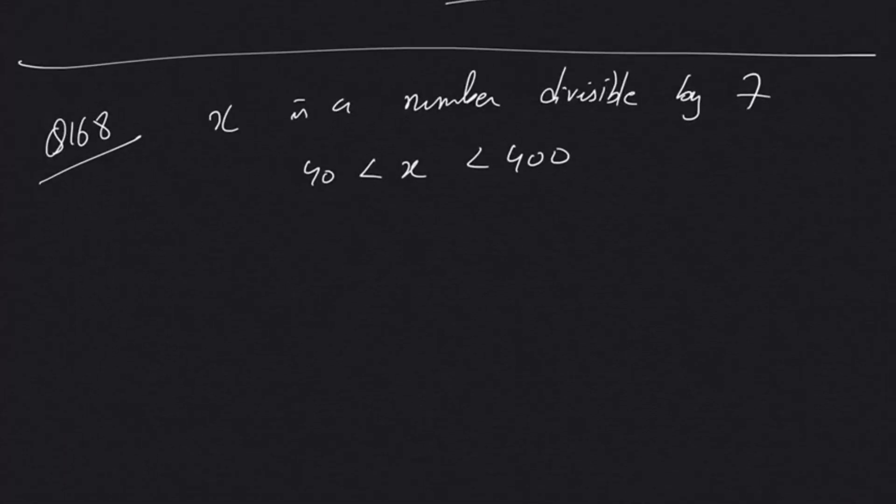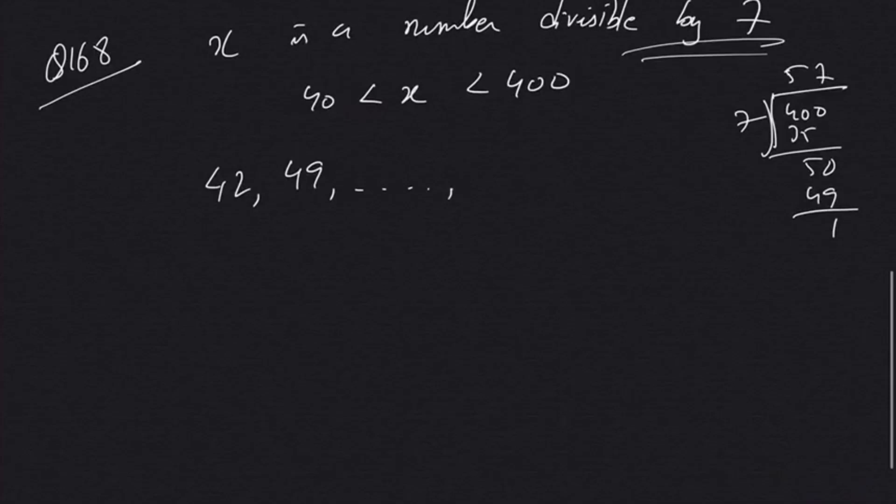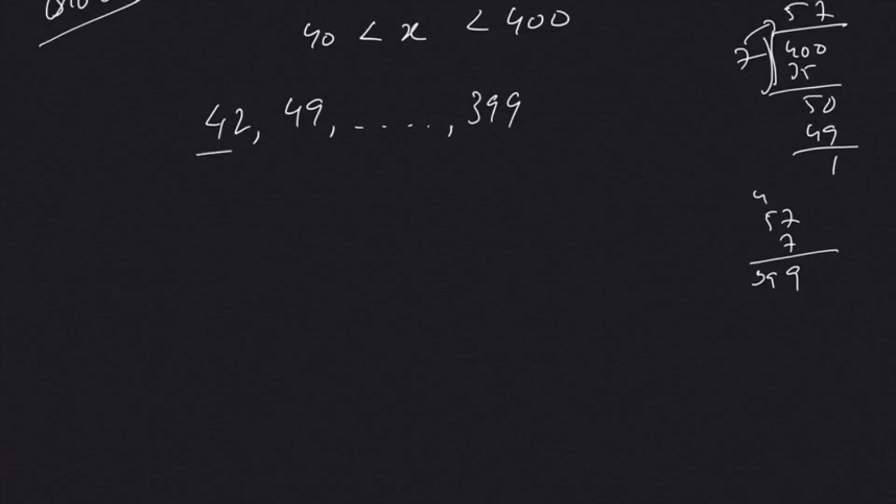Let's try to find out the sequence. 40 is not divisible by 7. The first number is 42, divisible by 7. Next is 49. Then if we move on, the last number till 400: for that you can do one shortcut—quickly divide 400 by 7. Seven fives are 35, 50. Seven sevens are 49, one left. That means 57 into 7 is 399. So the last number is 399. This will follow an arithmetic progression where the first term is 42.